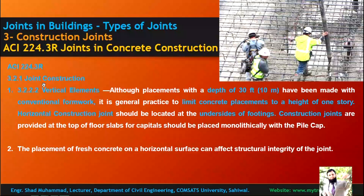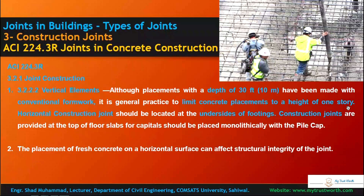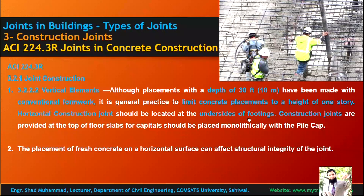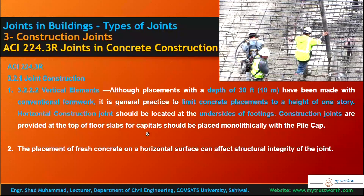For vertical structures, placement with a depth of 30 feet has been achieved by conventional formwork. It is general practice to limit concrete placement to a height of one story. Horizontal construction joints should be located at the underside of the footing. Construction joints are provided at the top of the floor slabs. Capitals should be placed monolithically with the pile cap.